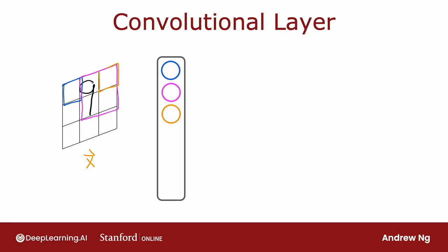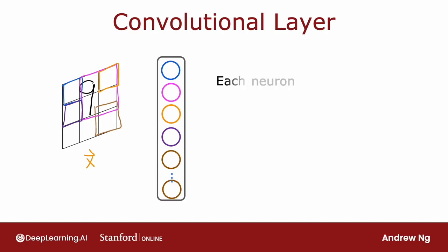And so on, for the third neuron, and the fourth neuron, and so on and so forth, down to the last neuron, which maybe looks only at that region of the image.